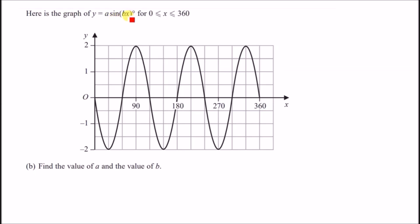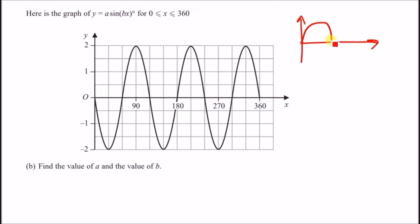Here is the graph of y = a·sin(bx) for 0° ≤ x ≤ 360°. The graph looks like an upside-down sine wave. Recall that the standard sine wave has a maximum of 1 and minimum of −1, with a maximum at 90° and minimum at 270°. First, sketch a reference standard sine wave to compare.